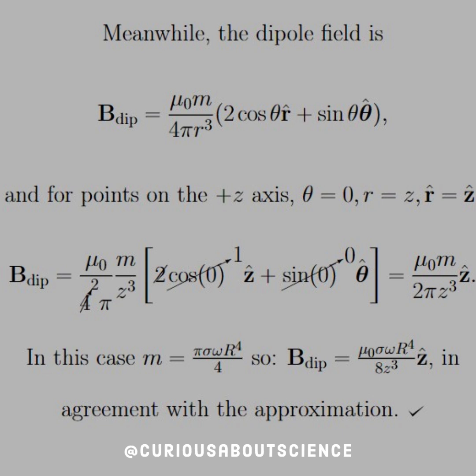So we've seen this before in another problem. Plug those in. They cancel away. And we're left with mu naught m over 2 pi z cubed in the z hat direction.